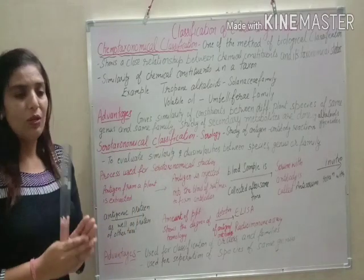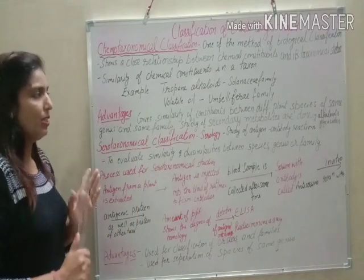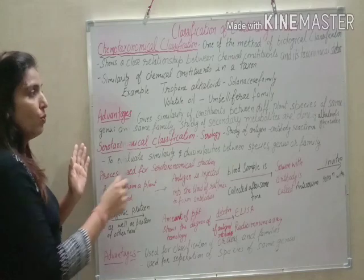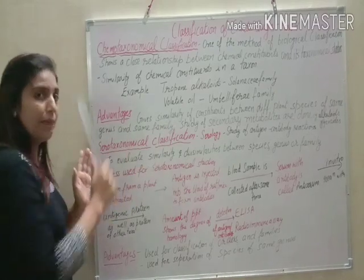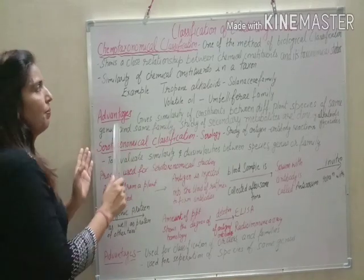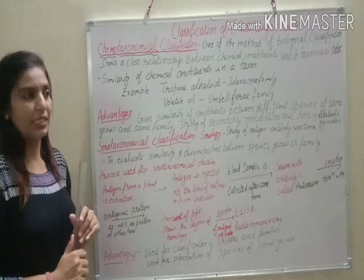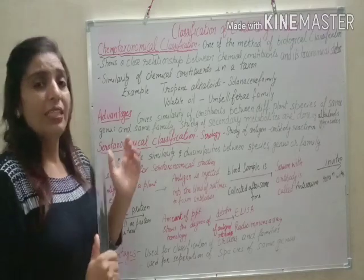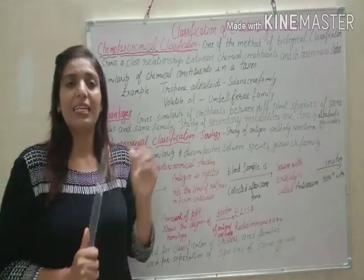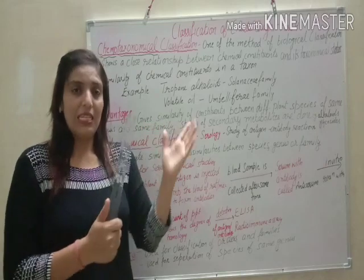Through chemo-taxonomical classification, we can identify a genus whose different species contain similar types of chemical constituents and group them together in this classification.